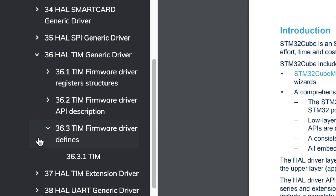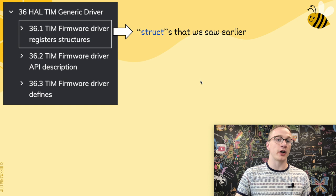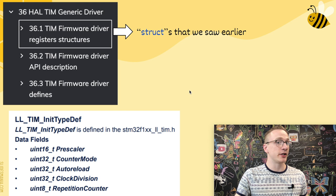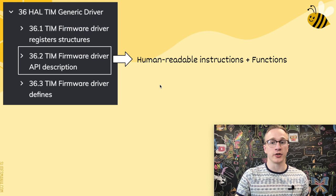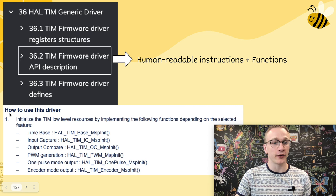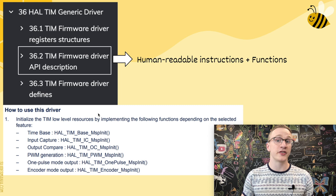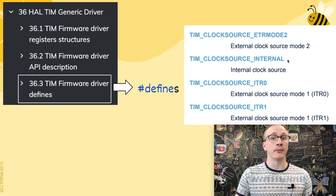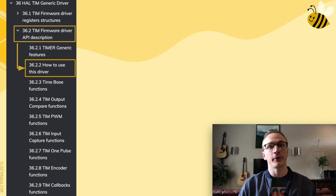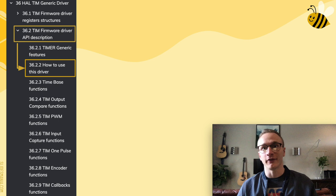If you want to read the whole thing no one's going to stop you, but I like to use the table of contents. I'm looking for PWM stuff, which I think falls within the timer documentation, so I can scroll down to get to the section I'm looking for. Most chapters tend to be broken up into three parts. The first section talks about structures — or the structs we saw earlier. The next section is the API description, which has human-readable instructions as well as function definitions. You can find things like "how to use this driver," which is a gold mine when you're trying to learn something new. The last section is a collection of defines — a giant list of all the define statements used when setting up structs or calling functions.